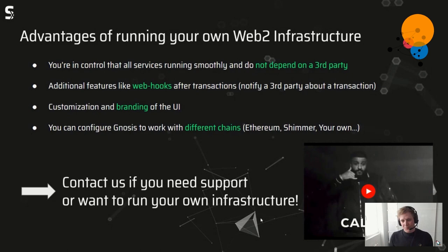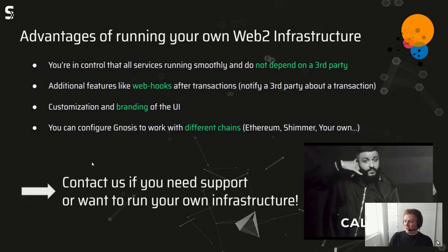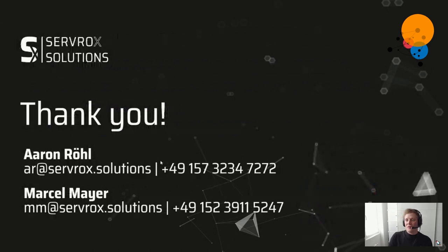We also plan to fork the Next.js application and put a nice Shimmer logo on it so everyone feels at home. You can configure the whole thing to work with different chains and even your own chain. One big benefit of the Shimmer network is that you can easily spin up your own Layer 2 chain, and if you want multi-signature wallets running there with Gnosis solutions, you can easily connect that. If you need support setting it up or want to run your own infrastructure, feel free to reach out.